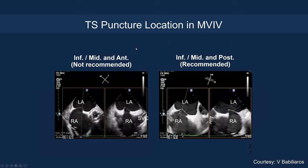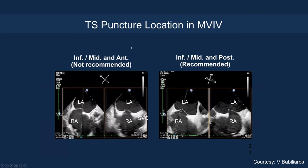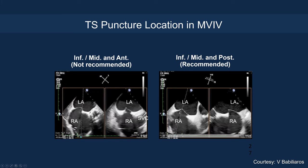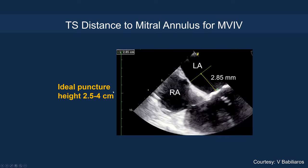For mitral valve-in-valve procedures, you definitely want to avoid an anterior puncture as it makes railing very difficult. You want to go more posterior — inferior, mid, and posterior. Instead of the four to four-and-a-half centimeter height needed for a MitraClip, you don't need to be that high; two and a half to four centimeters is sufficient to allow railing. However, you don't want to be too low, so that for the SAPIEN transcatheter valve you don't run out of room to position the valve.